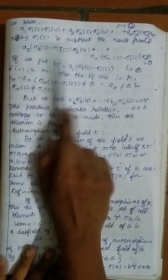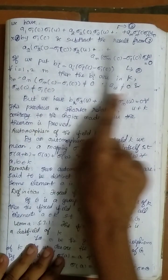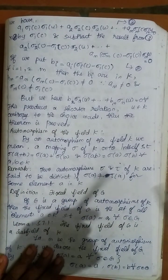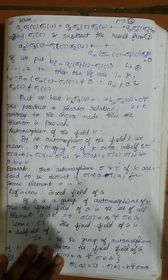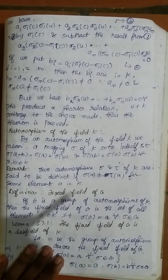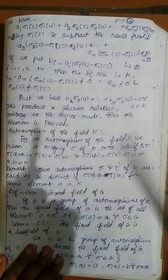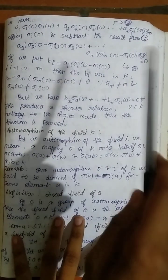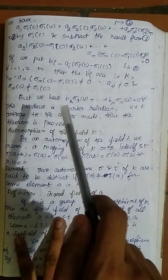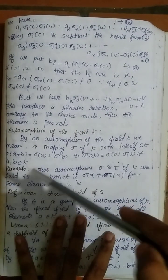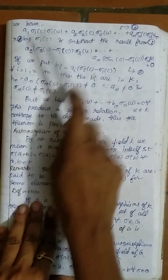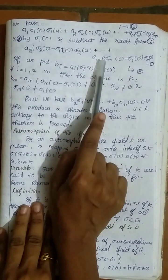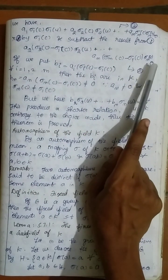After replacing and multiplying the star relation by sigma_1(c) and subtracting it from the new relation, the first term cancels out, and we get: a2·(sigma_2(c) − sigma_1(c))·sigma_2(u) + ... + am·(sigma_m(c) − sigma_1(c))·sigma_m(u) = 0.